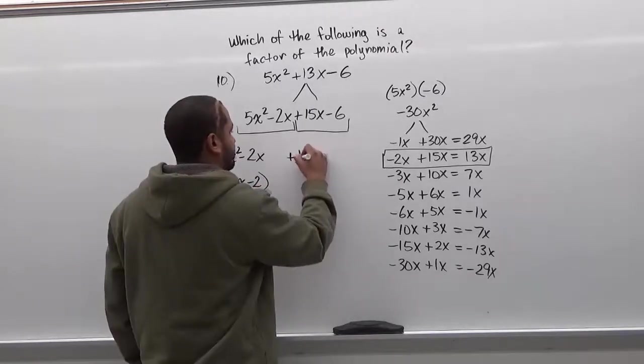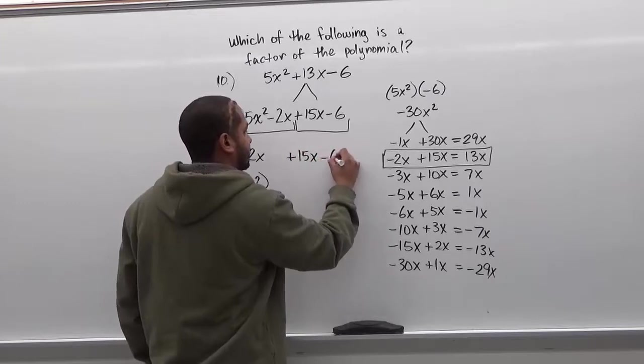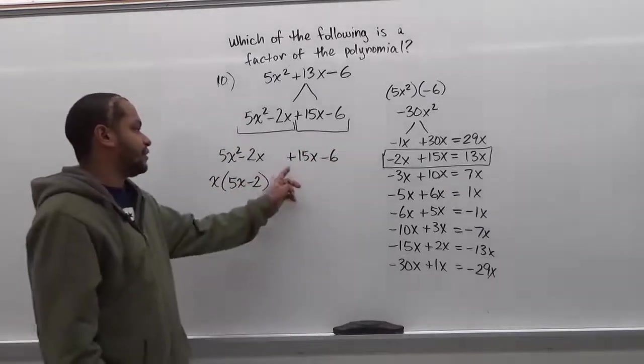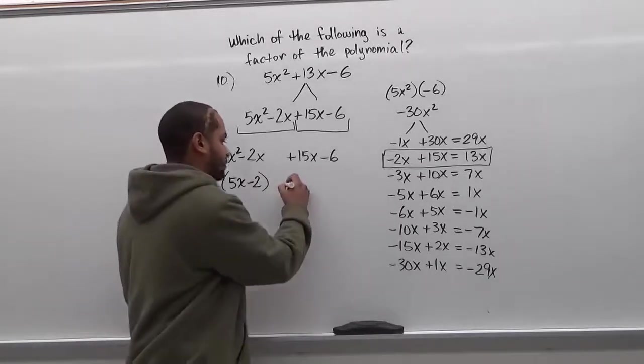Now for our second group we have positive 15x and negative 6. This is a really important step when you're factoring. Whatever the third term sign is you're going to factor out firstly.